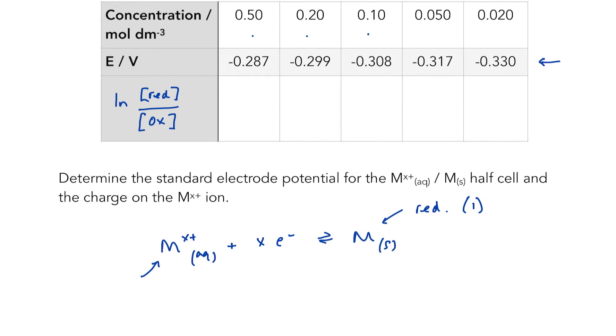So for each of these concentrations, I am going to be plugging into my calculator: ln 1 over 0.50, ln 1 over 0.20, and so on. Now I've gone ahead and done that, and the numbers are as such.